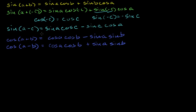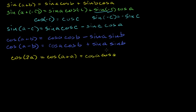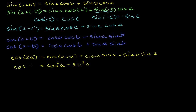What if I wanted an identity for the cosine of 2a? The cosine of 2a is just the same as the cosine of a plus a, and we can use the cosine addition formula. With b equal to a, this becomes cosine of a times cosine of a minus sine of a times sine of a, which I can rewrite as cosine squared of a minus sine squared of a. So that's one identity: cosine of 2a equals cosine squared of a minus sine squared of a.